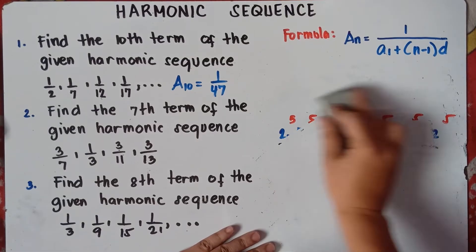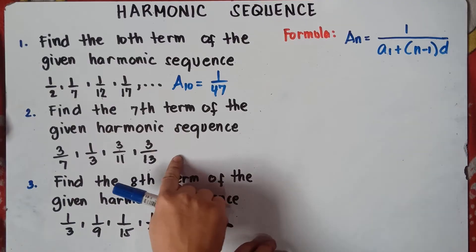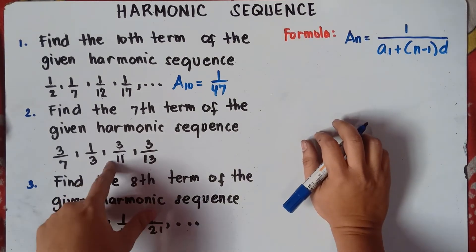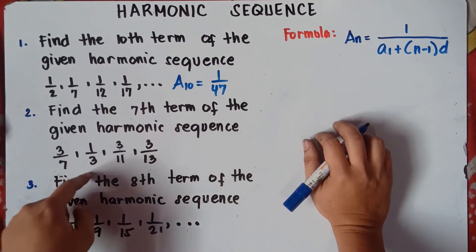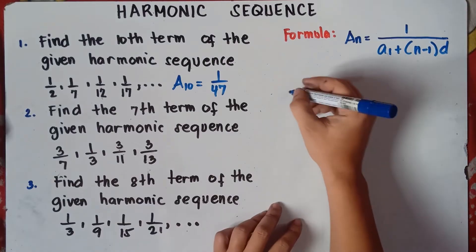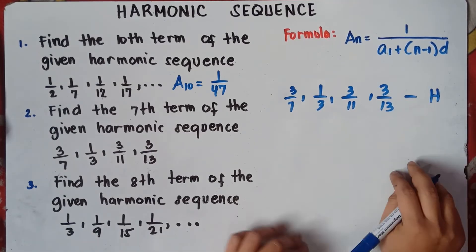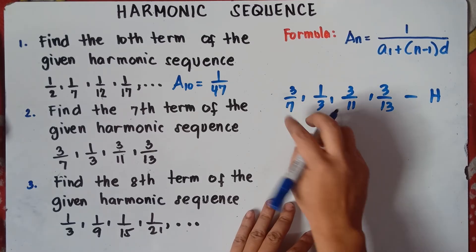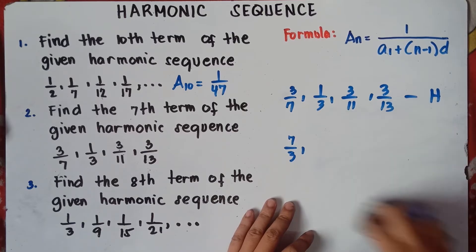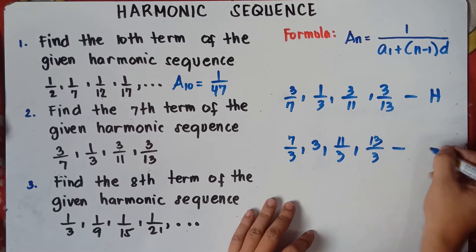Let's try number 2. Find the 7th term of the given harmonic sequence: 3 over 7, 1 over 3, 3 over 11, and 3 over 13. To answer this, we need to convert these numbers into arithmetic sequence. Get the reciprocal: 7 over 3, 3 over 1 or 3, 11 over 3, and 13 over 3. This will be the arithmetic sequence.